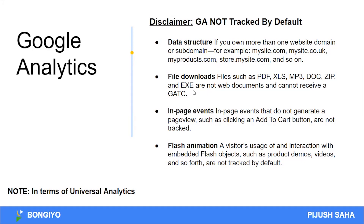The file download tracking type in Google Analytics — I will definitely cover the Universal Analytics version (Google Analytics 3) as well as Google Analytics 4. For file downloads, Google Universal Analytics does not track them by default. We will have to pass the event via Google Tag Manager, or we will have to set up raw code.